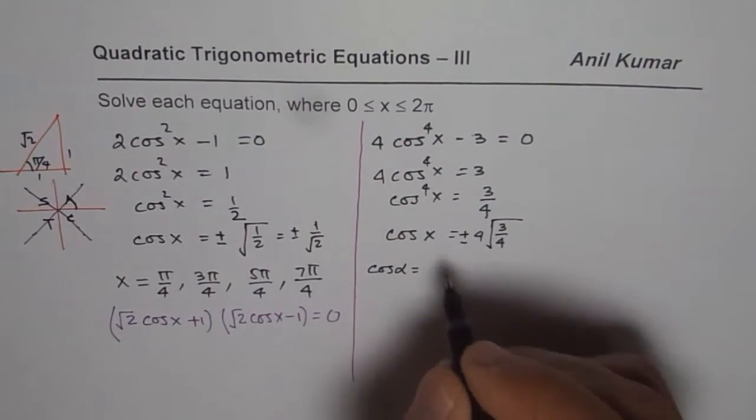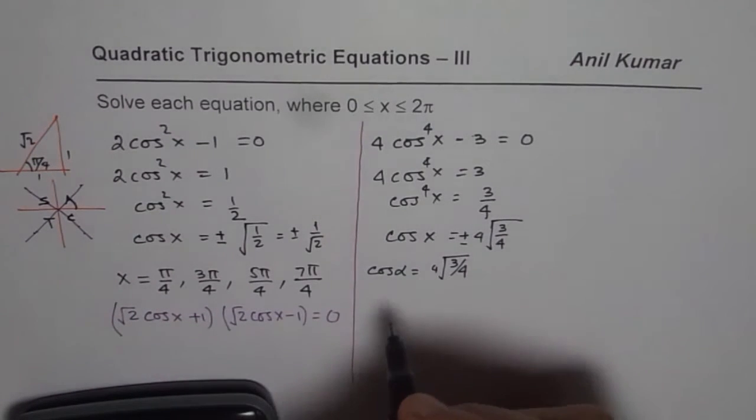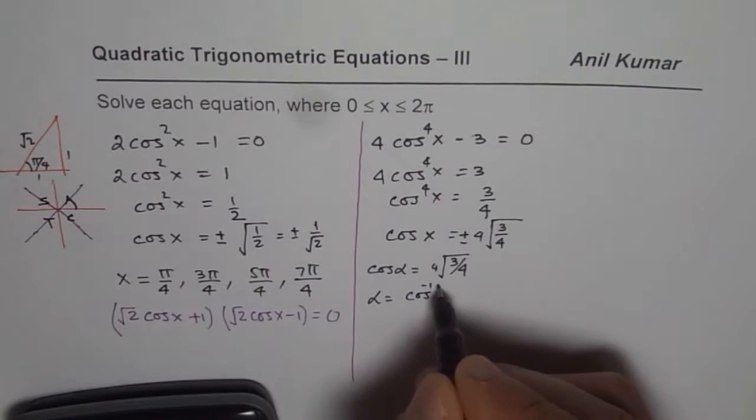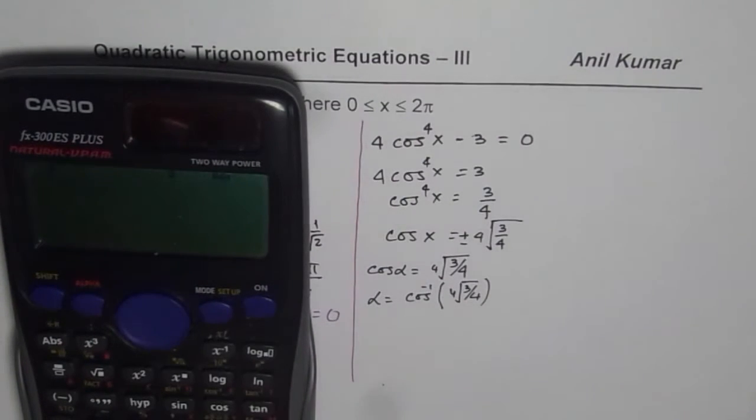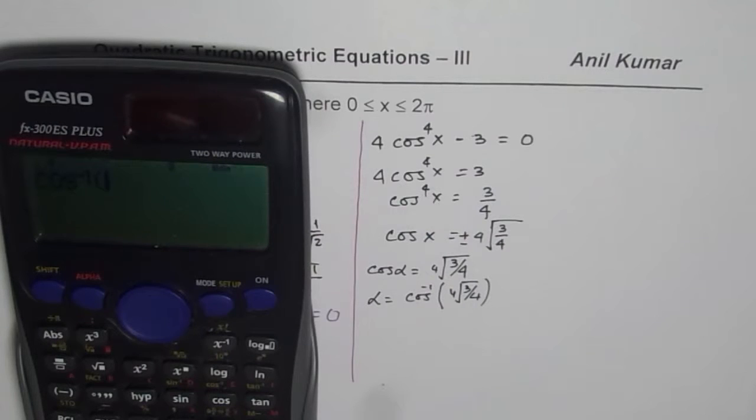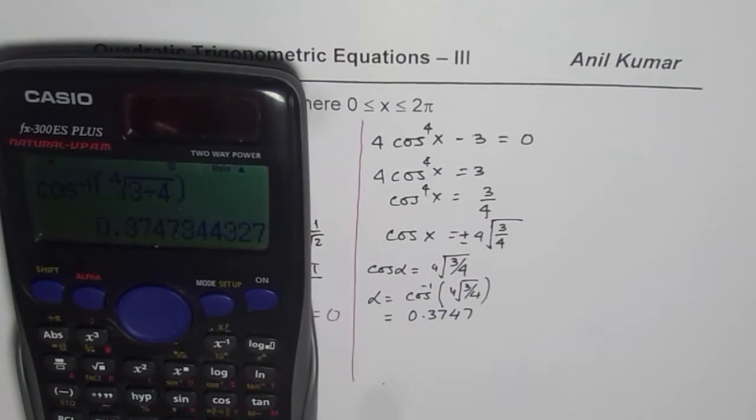We'll say cos(α) = ⁴√(3/4). So let's find alpha first. So we say α = cos⁻¹(⁴√(3/4)). So you can use the calculator. We say second function cos inverse and within brackets we want to write the fourth root. So we'll write 4 here and within the brackets we have a fraction 3/4. So that gives us 3 divided by 4, then close this bracket equals, so that gives you the answer in decimals. What we get here is 0.3747. So that is the value of alpha.